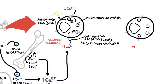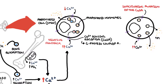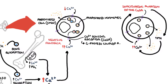Familial hypocalciuric hypercalcemia is caused by an inactivating mutation of the calcium sensing receptor. So basically, in the presence of high calcium levels, the calcium sensing receptors don't detect this properly and will still release small amounts of parathyroid hormone, further increasing blood calcium levels. People with familial hypocalciuric hypercalcemia typically only have mild hypercalcemia. Patients still have a functional calcium sensing receptor — the set point at which it responds to high calcium levels is just higher.